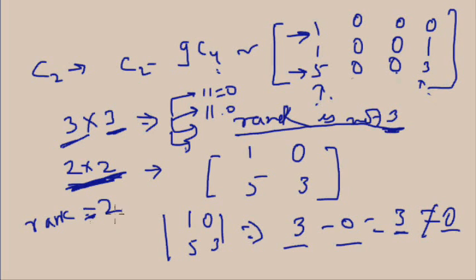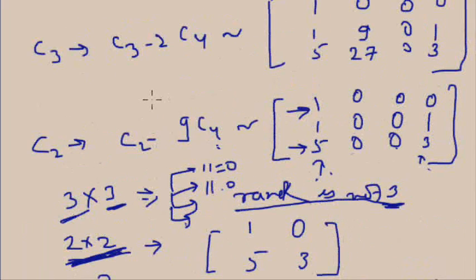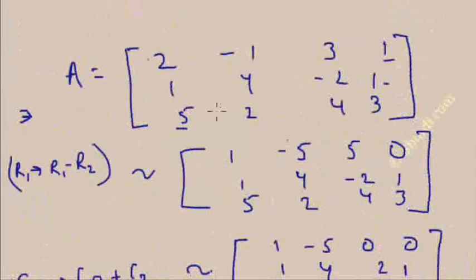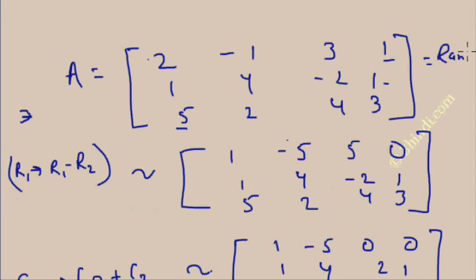Since higher order (3×3) determinants are all zero, but at the 2×2 level I found a non-zero determinant value, the rank is 2. The rank of this equivalent matrix is 2, which is the same as the rank of original matrix A. Therefore, rank of A is 2.